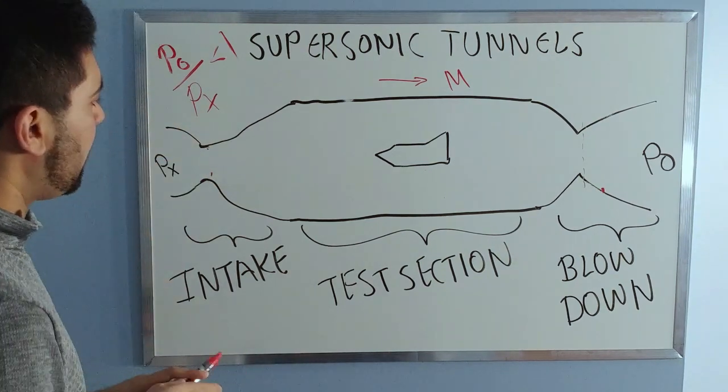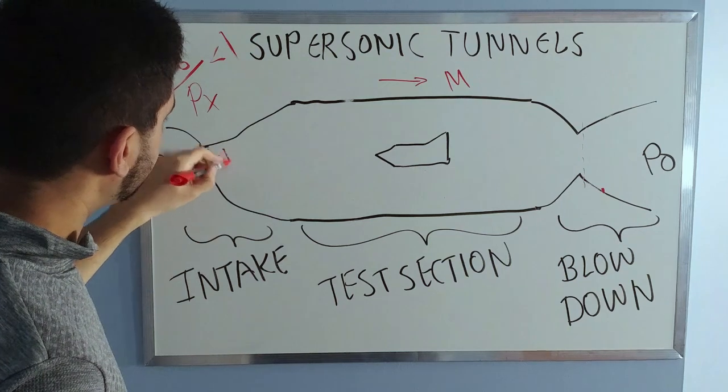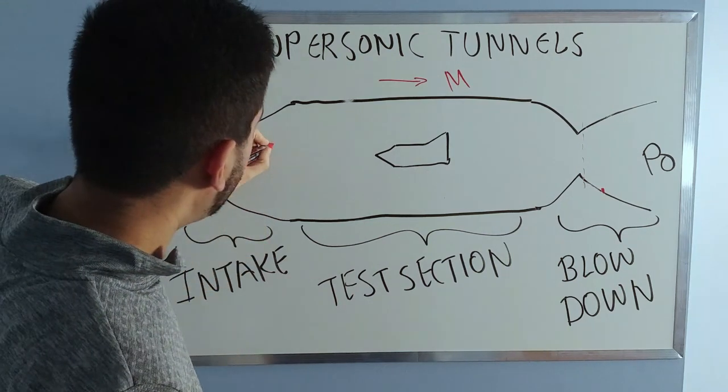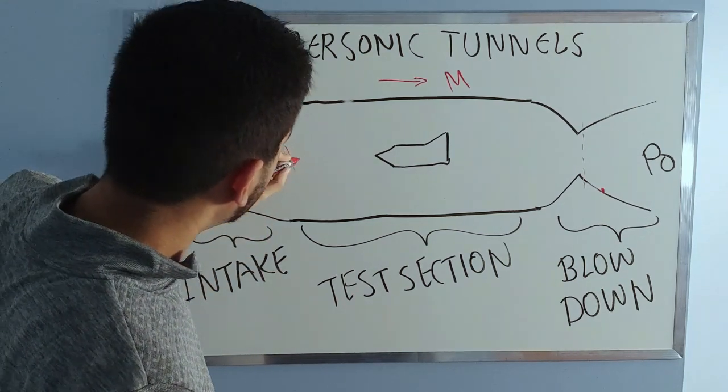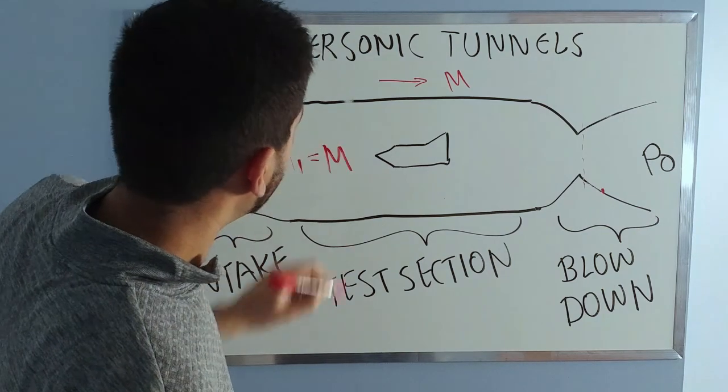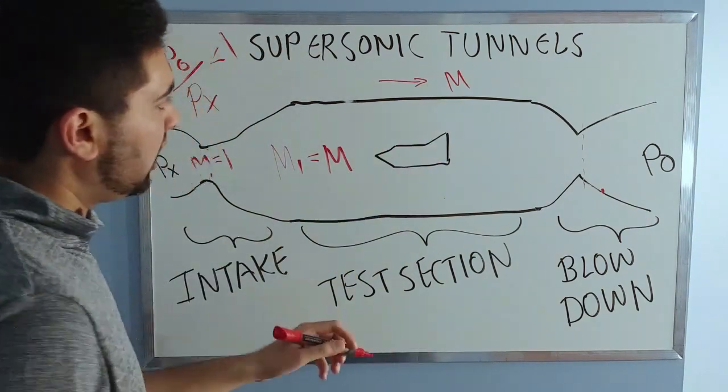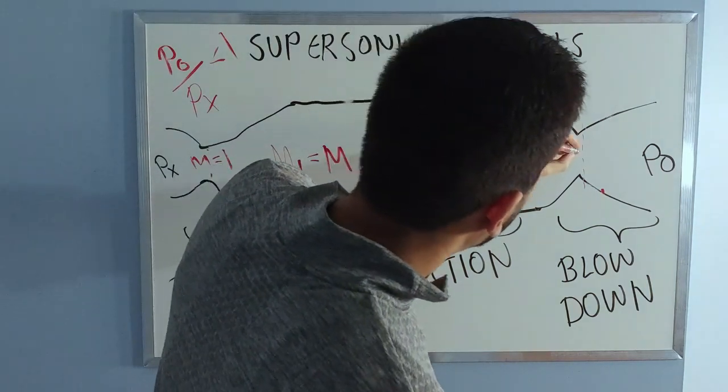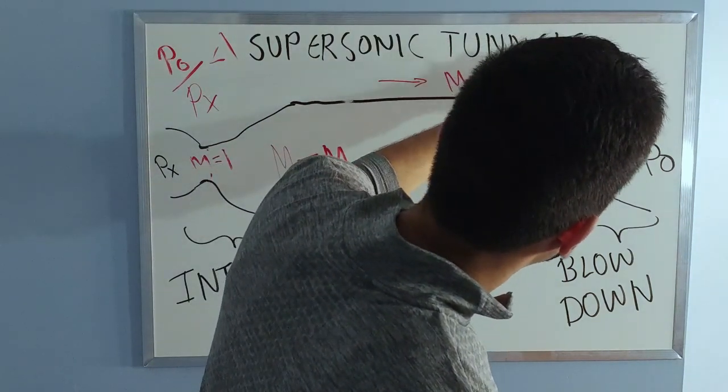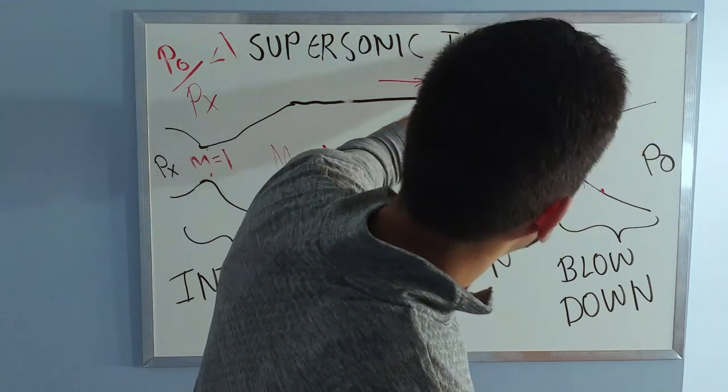Let's erase it. Here you will have Mach equal to 1. Here you will have m1 equal to M, and that's your design Mach number, the Mach number you designed this tunnel for. Here your Mach number will be the same, and here it'll be some value which is less than this Mach number, but this is also more than one.